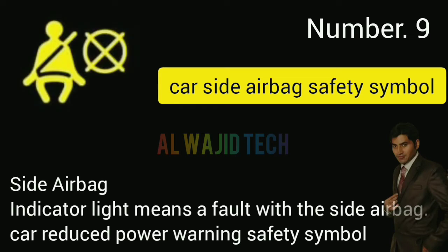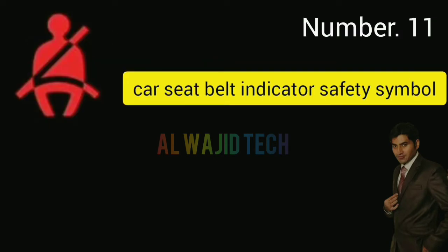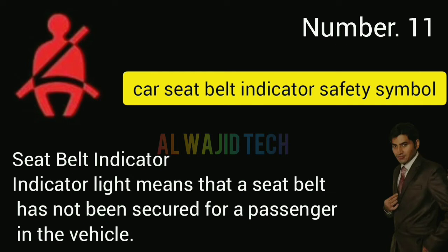Number nine: Car side airbag. The side airbag indicator means a fault with the side airbag. Number ten: Reduced power warning. The reduced power warning indicator means that the engine computer has limited engine power output. Number eleven: Car seatbelt indicator. The seatbelt indicator means that a seatbelt has not been secured for a passenger in the vehicle.